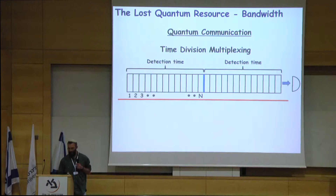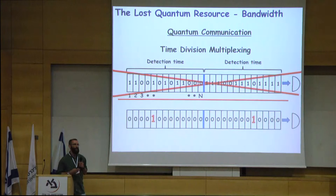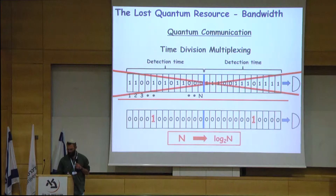However, although we would like to use simultaneously all the time bins, we can only detect a single photon per detection time. So instead of gaining n bits of information, we are left with only log n.